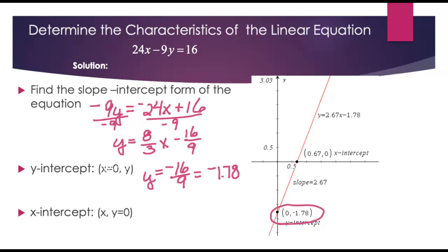The x-intercept occurs when we replace the y with 0. So that's a little bit more involved as far as the work. So the y is 0, and we get 8/3x minus 16/9.